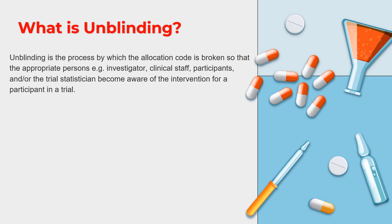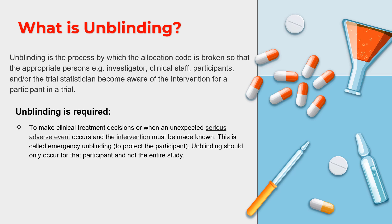Why would you need to unblind? The primary reason is to make clinical treatment decisions. For example, if a subject participating in a clinical trial experiences a serious adverse event or any adverse event requiring intervention, it is very important for the treating physician or doctor to know exactly what drug the subject was taking and how to address that complication. In an emergency situation, emergency unblinding is performed — the treating doctor is told what drug the subject was given, and based on that critical information, the right treatment can be provided to ensure subject safety. Importantly, unblinding is done only for that one single subject, not the entire trial.